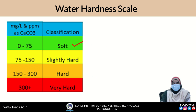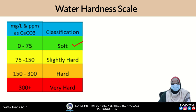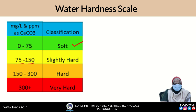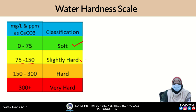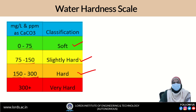Water hardness scale: if the hardness of water is between 0 to 75 mg per litre, we call that water soft water. If it ranges from 75 to 150 ppm, it is known as slightly hard water. From 150 ppm to 300 ppm, the water is known as hard water, and above 300 ppm it is very hard water.